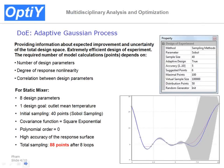For the design of experiment, we use the adaptive Gaussian process. This is a very efficient computing process. For the static mixer, we have 8 design parameters and 1 design goal. We need only 88 model calculation points in total. This is very efficient, and it is also applicable for simulation models with a long computing time.